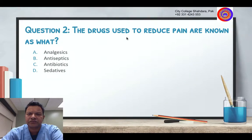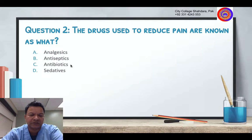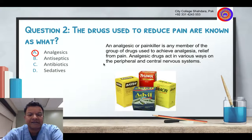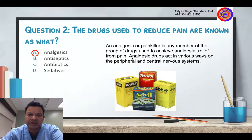Question number two: The drugs used to reduce pain are known as what? Medicine that reduces pain — is it analgesics, antiseptics, antibiotics, or sedatives? Antibiotics cannot be the answer — we already discussed those kill or stop bacteria. The answer is analgesics. Analgesics and pain killers are the same thing. Analgesics are any member of the group of drugs used to achieve analgesia — to eliminate pain and provide relief.